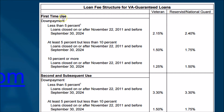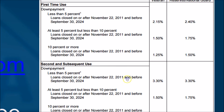Most people getting a home for the very first time with a VA mortgage will pay a 2.15% funding fee. If you're a reservist or National Guard member, the funding fee is a little different. Every time after your initial — or what we call first-time — use, you will pay a slightly higher funding fee.